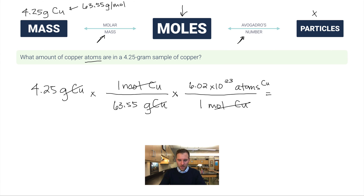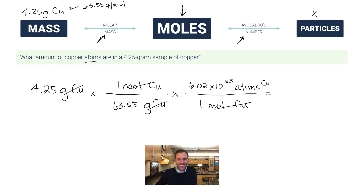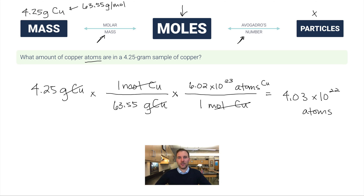Calculate: 4.25 divided by 63.55, multiplied by 6.02 times 10²³, which gives 4.02596 times 10²². Rounding to 3 significant figures (matching what we started with), the answer is 4.03 times 10²² atoms of copper — that's how many atoms are in a 4.25 gram sample of copper.